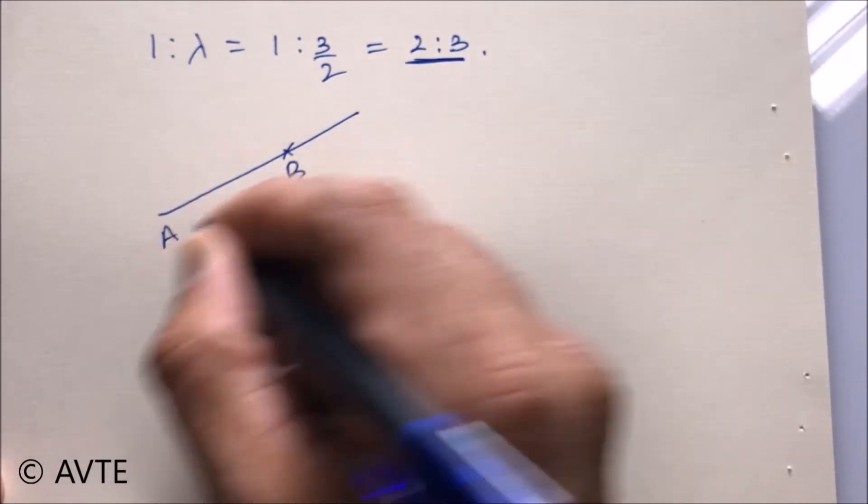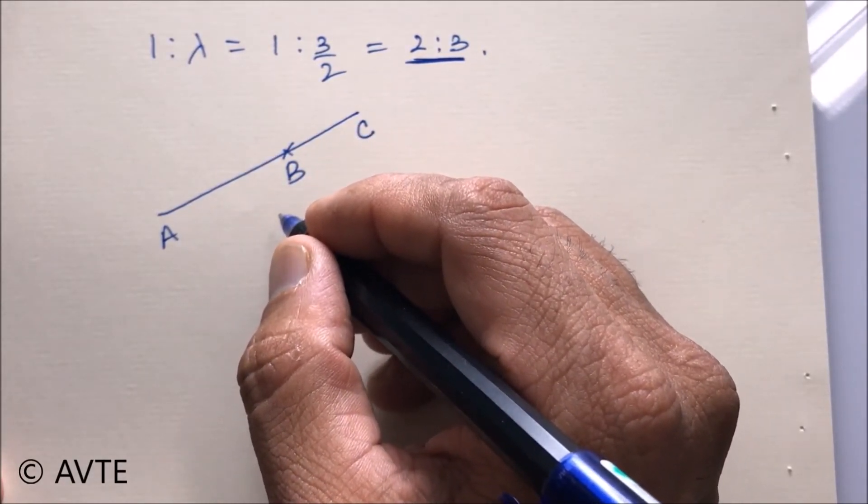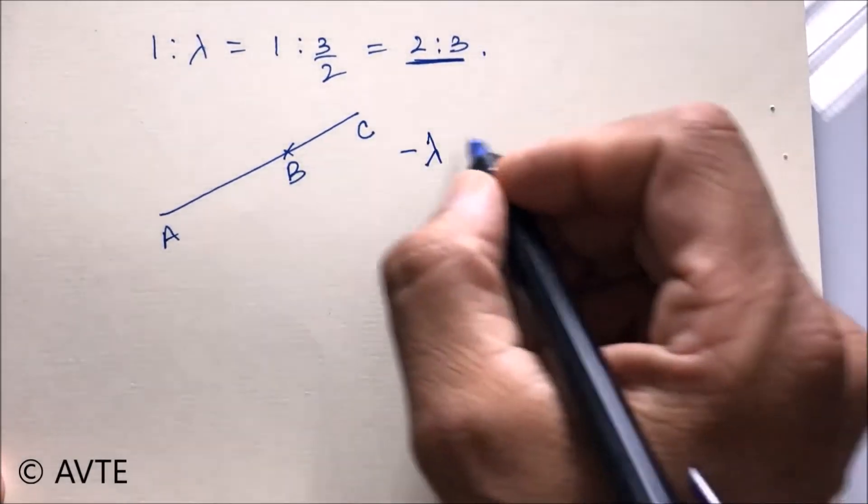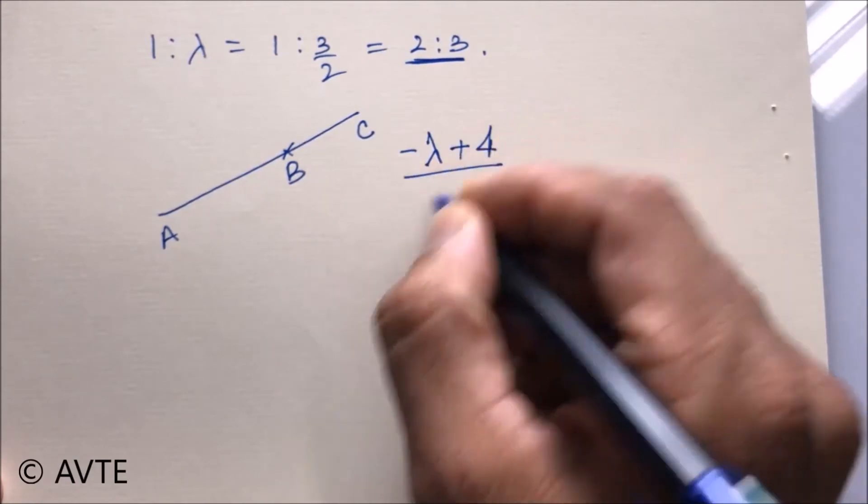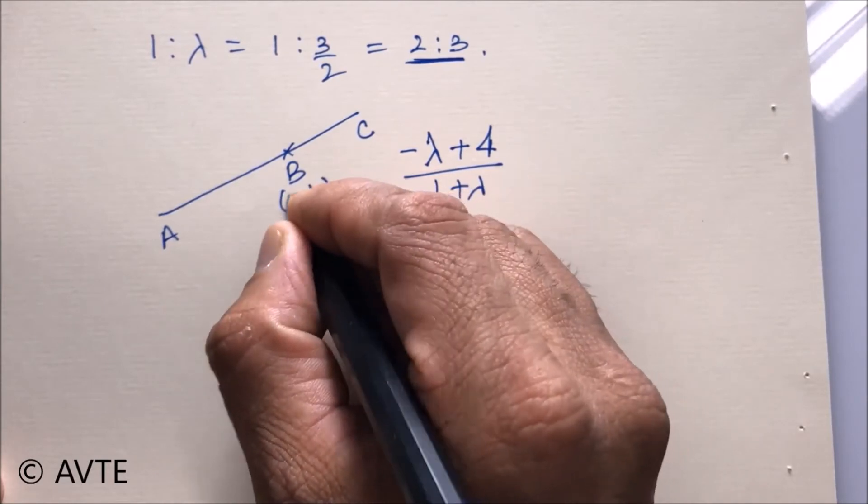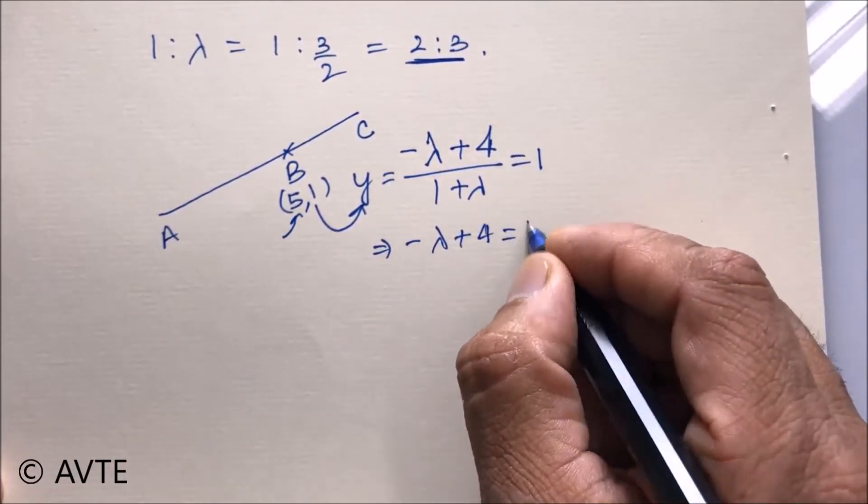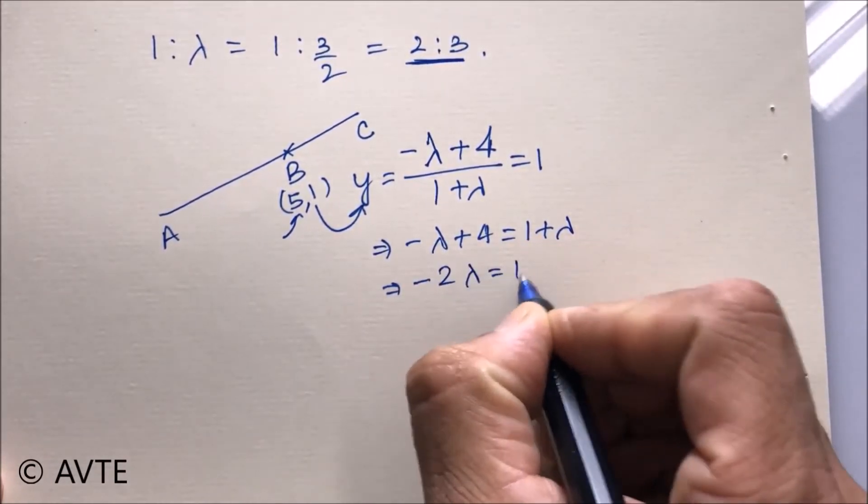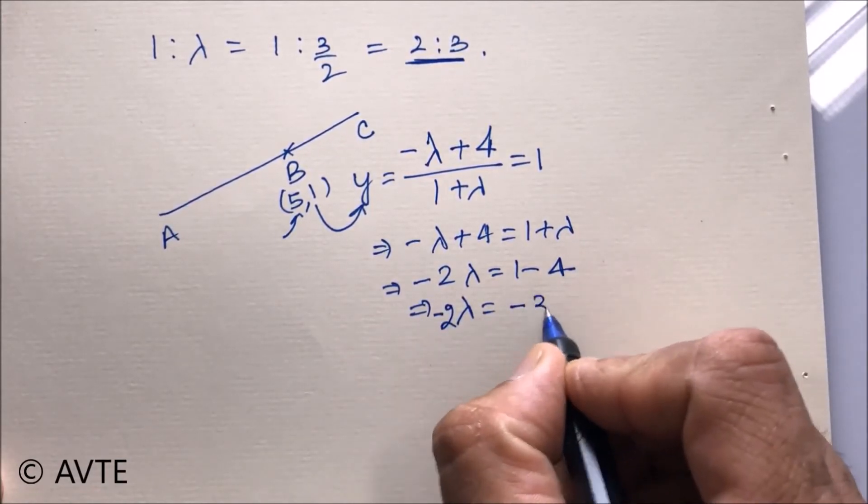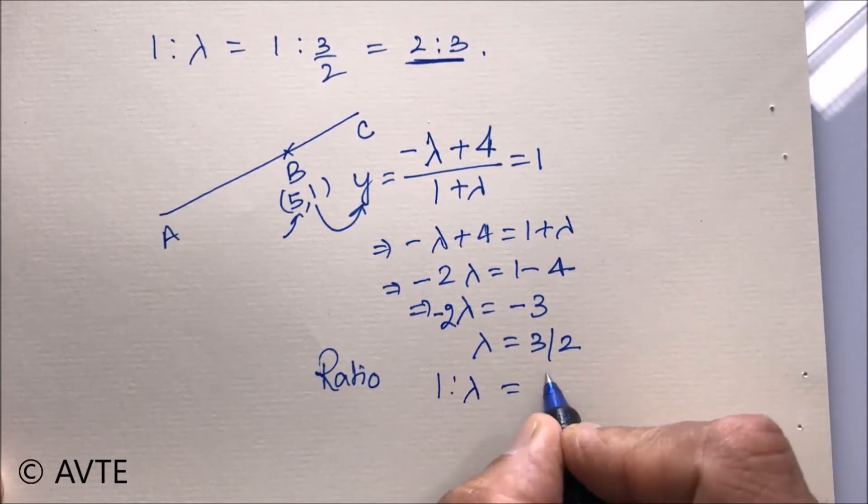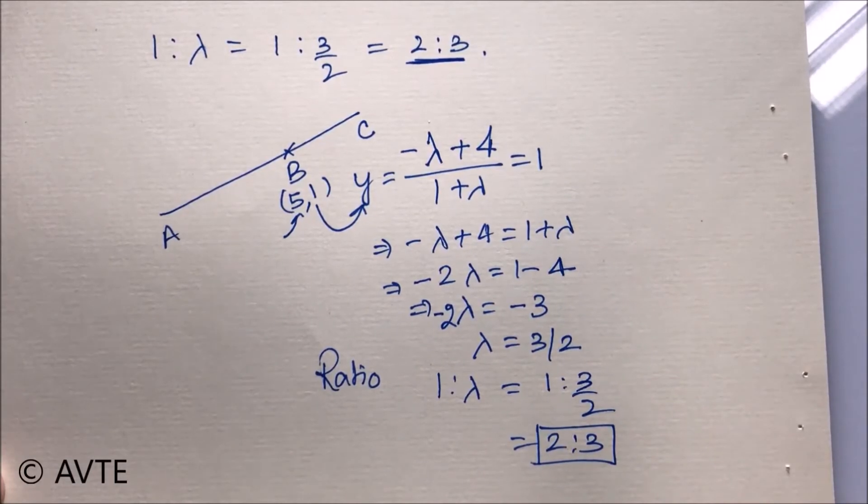Now what you do, you repeat the process. And this time you calculate y component. And when you calculate y component, it is minus lambda plus 4 upon 1 plus lambda. And if you remember, the y component is 1 because x was 5. And now you put y component as 1. So you put this as 1. So lambda again comes as 3 by 2. That is, the ratio is again. So since the ratio is coming same, it means it holds the section formula. And when it holds the section formula, that is only possible when the points are collinear.